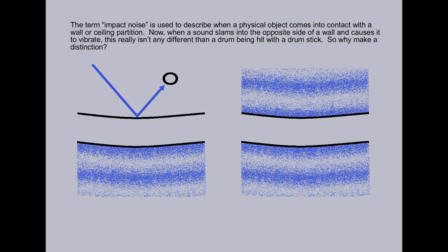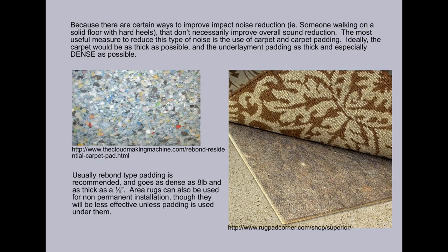The term impact noise is used to describe when a physical object comes into contact with a wall or ceiling partition. Now, when sound slams into the opposite side of a wall and causes it to vibrate, this really isn't that different from a drum being hit with a drumstick. So why the distinction? Because there are certain ways to improve impact noise reduction, i.e. someone walking on a solid floor with hard heels, that don't necessarily improve overall sound reduction.